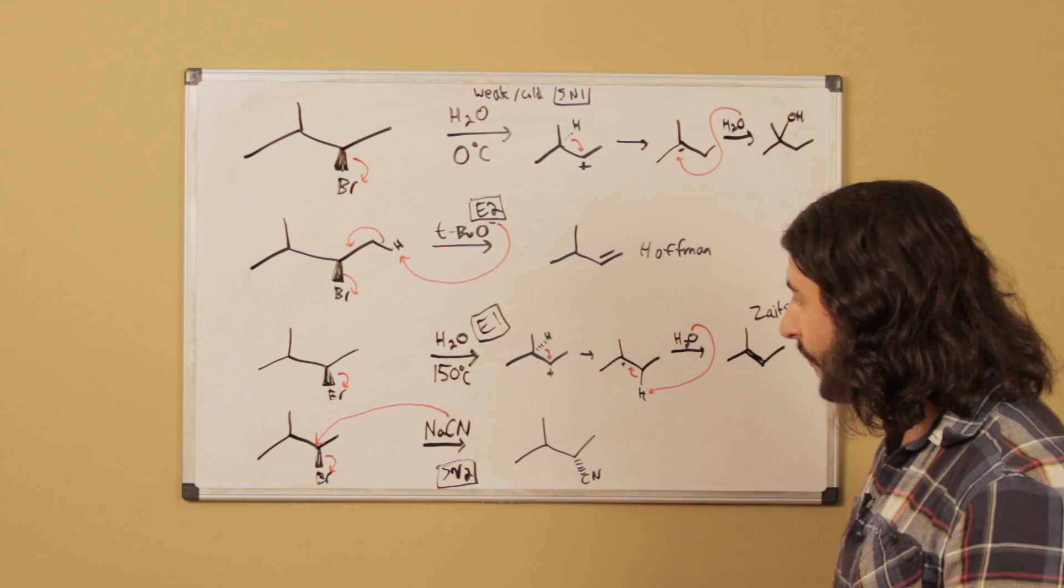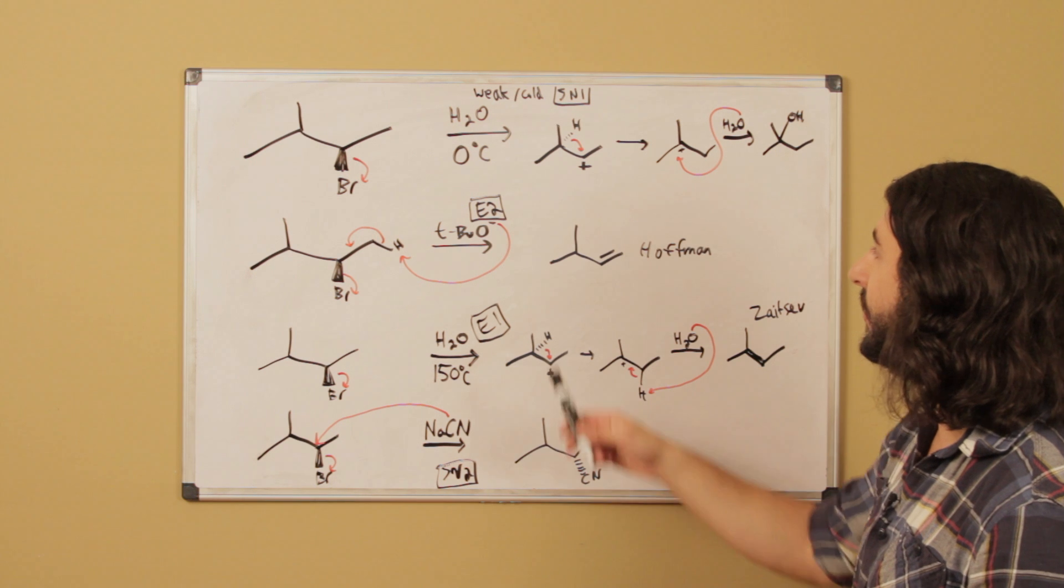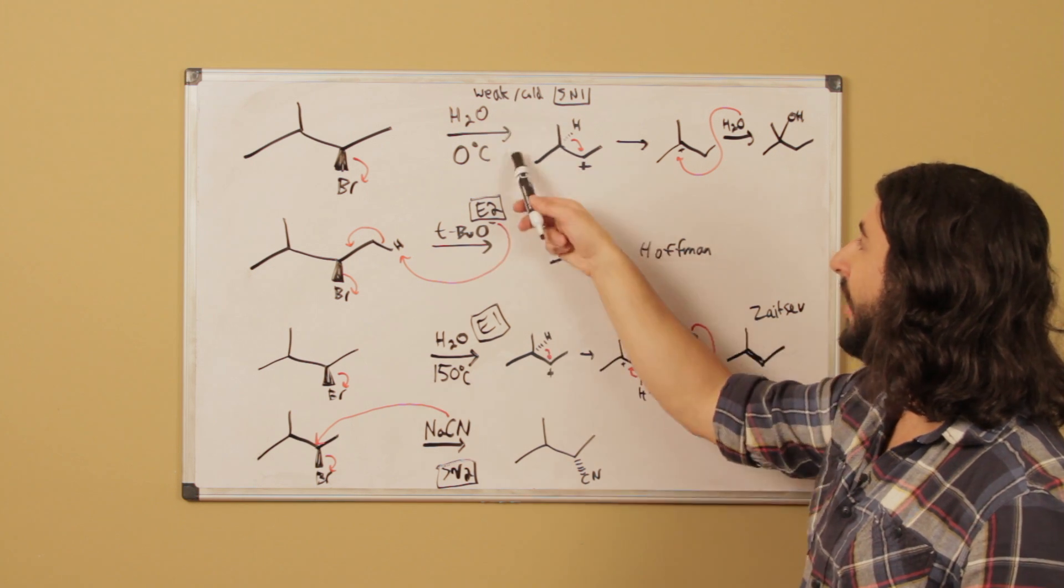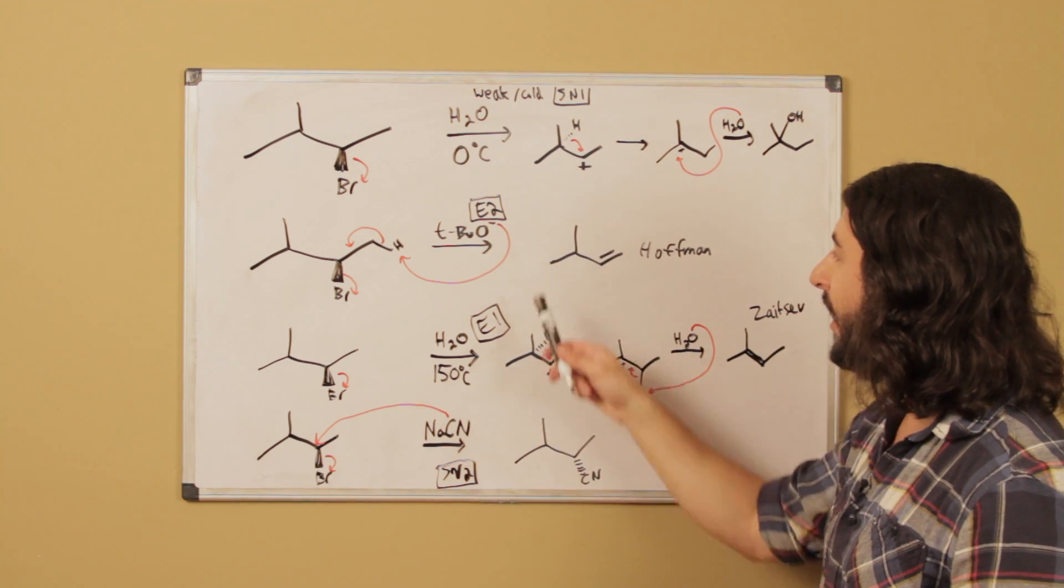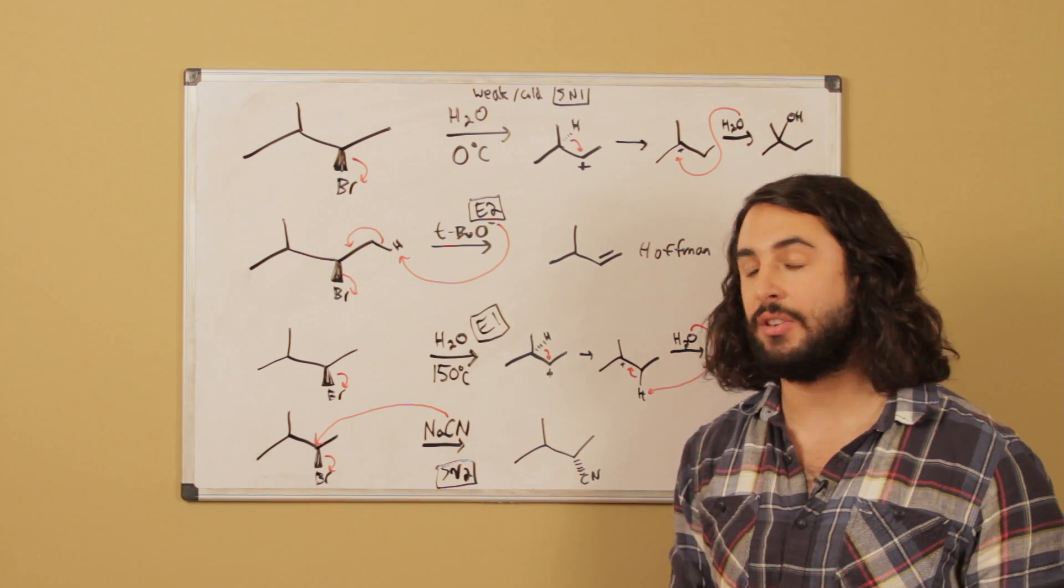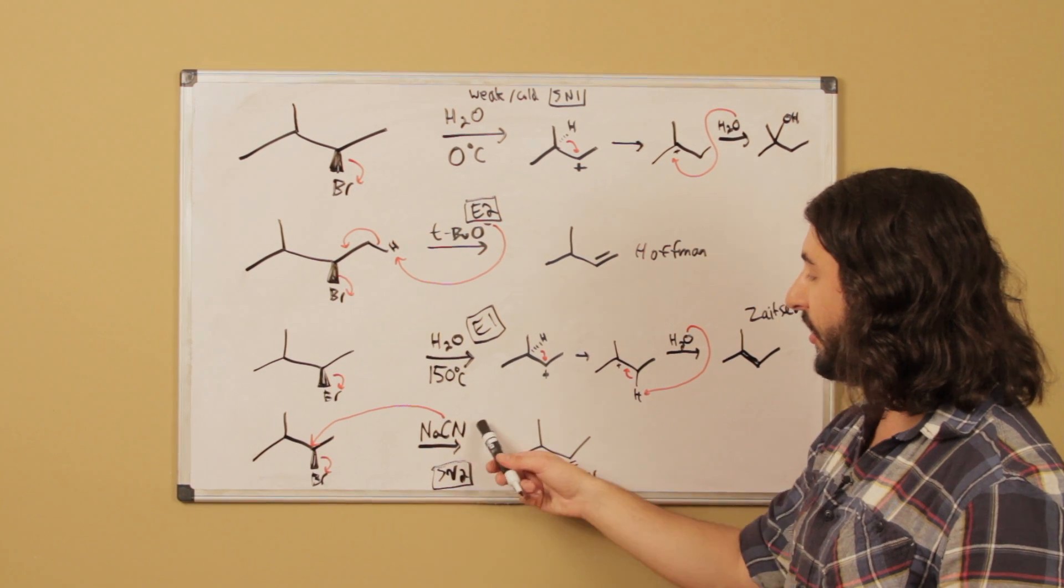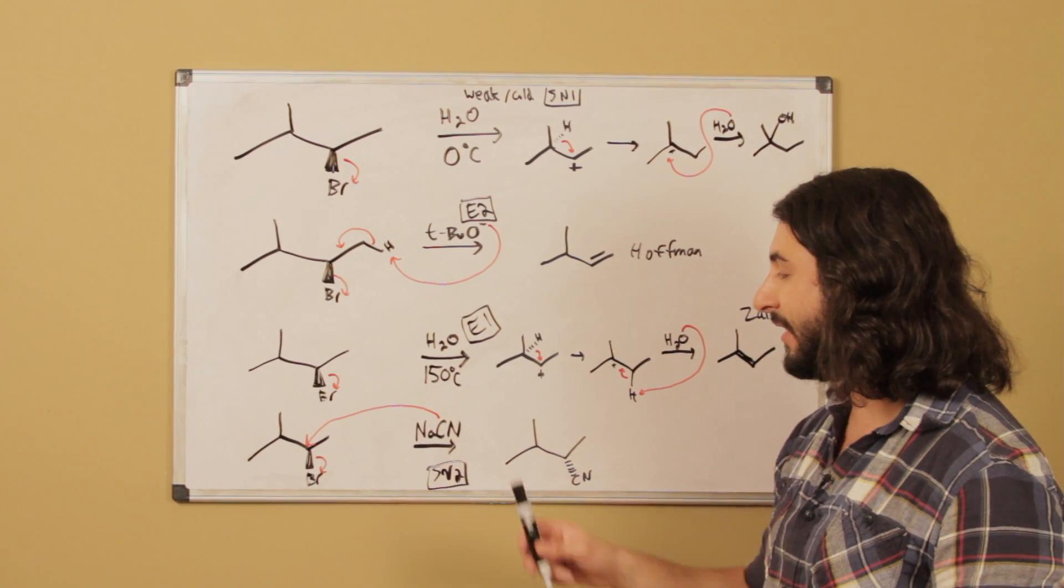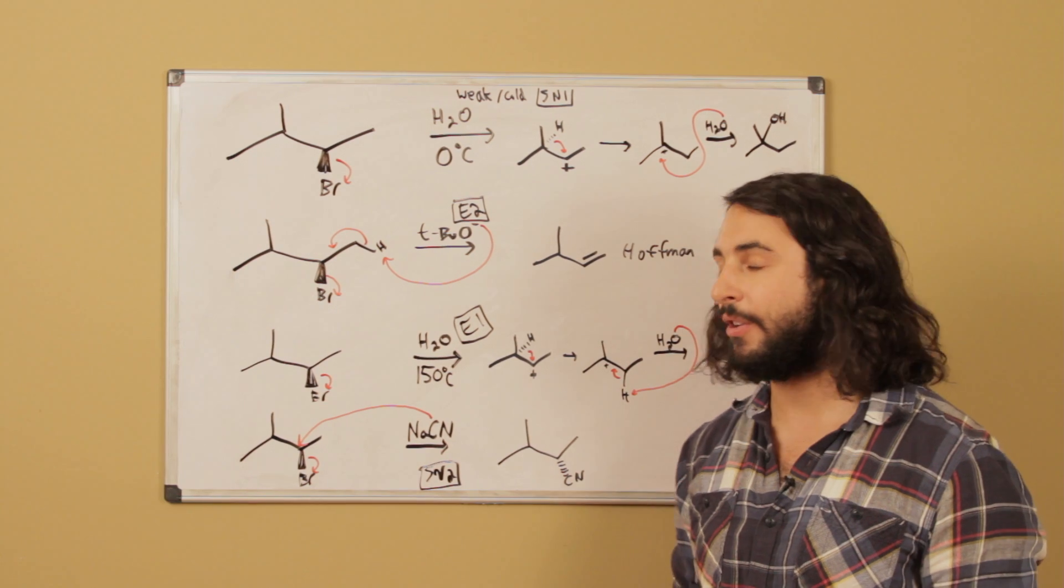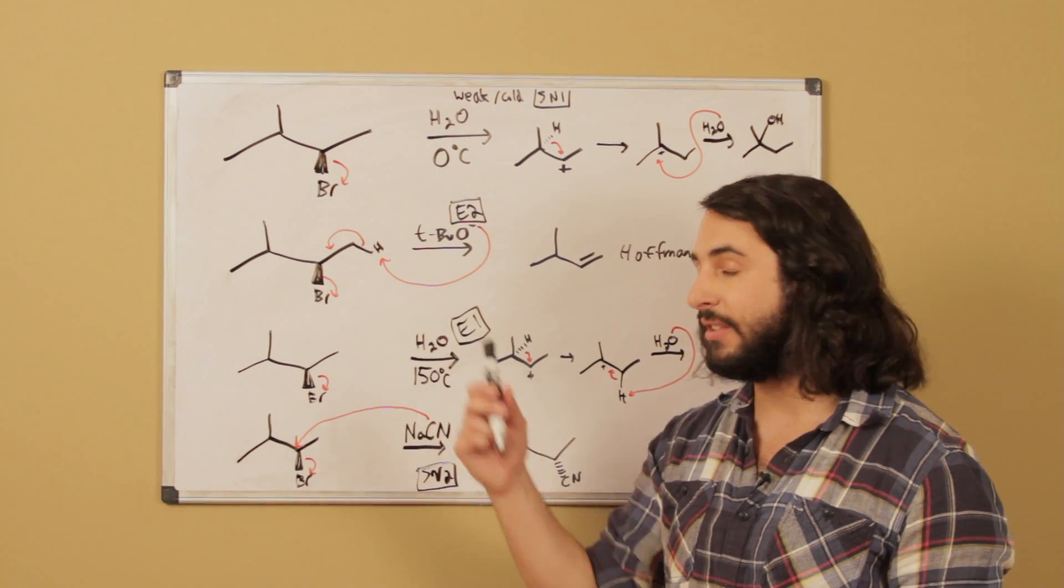And we know that SN2 always occurs with inversion of stereochemistry, so that has to be on the dash bond there. So there we have our four reaction conditions. Weak and cold is going to give us SN1, this is strong and sterically hindered so we've got E2, this is weak and hot so we've got E1, and then we know that this is a strong nucleophile, this is an excellent SN2 nucleophile. So there are the four reactions that we've got on this substrate.